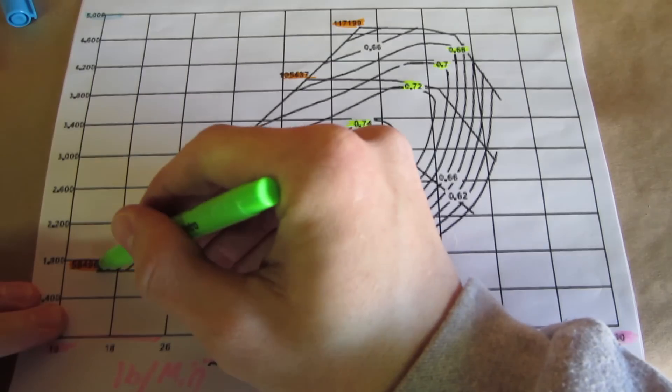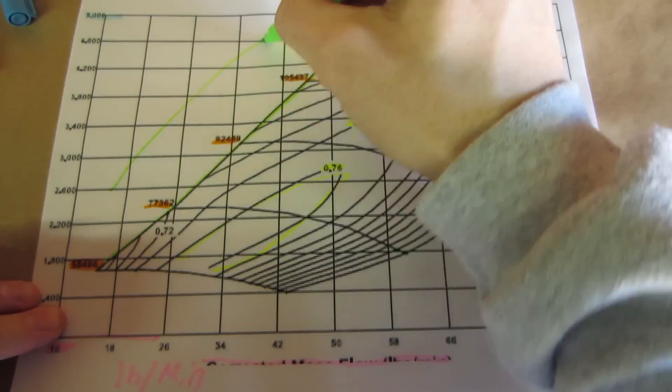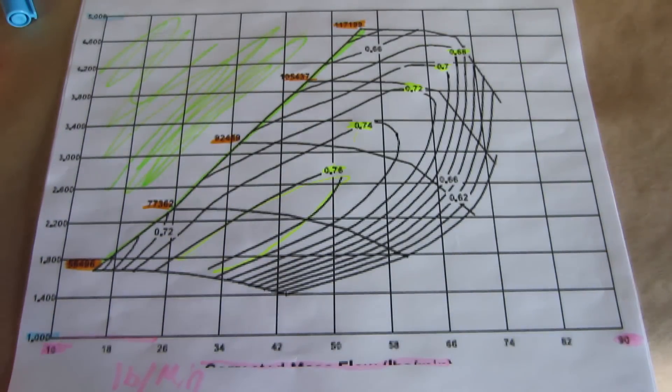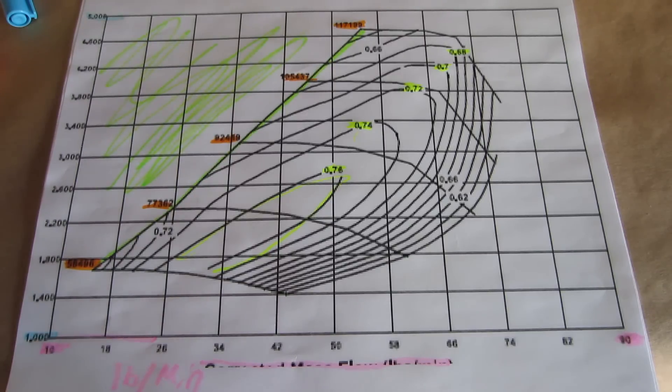The line that runs up the left side here is the surge line. Any point plotted to the left of this line would mean that the compressor is too big. There would not be enough exhaust flow to spin the wheel fast enough to generate the desired boost and therefore making that compressor useless at that particular point.